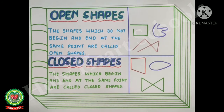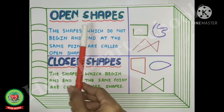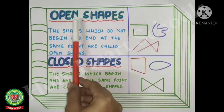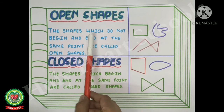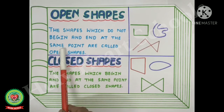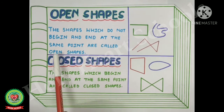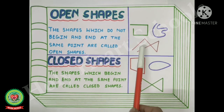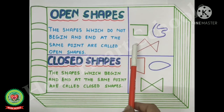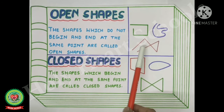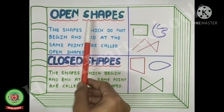We will understand about open shapes and closed shapes. Open shapes: the shapes which do not begin and end at the same point are called open shapes. These figures do not have the same beginning point and ending point, so these are examples of open shapes.